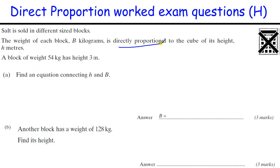Next question. Directly proportional to the cube of its height. So B is directly proportional to the cube of the height, or the height cubed. We're always given two values so we can work out the constant and find the equation. So B equals K times H cubed.